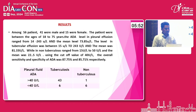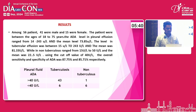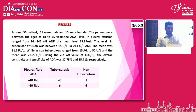Among 56 patients, 41 were male and 15 were female. Patients were between the ages of 18 to 75 years. The ADA level in pleural effusion ranged from 14 to 243 units per liter, with a mean level of 73.85 units per liter. In tuberculous effusion, ADA levels ranged from 15 to 243 units per liter, with a mean of 81.33 units per liter.